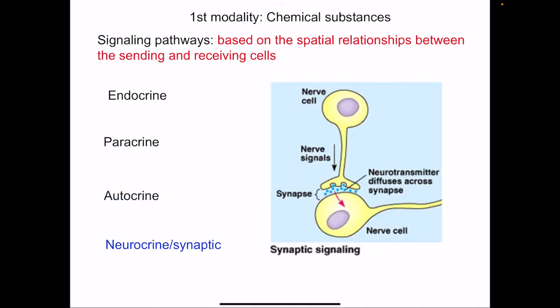Finally, there is neurocrine or synaptic signaling, which is basically the release of neurotransmitters by the neuron and these neurotransmitters acting on the post-synaptic membrane of another neuron. So based on the spatial relationship between the sending and receiving cells, there are four types of chemical signaling as a mode of intercellular communication.